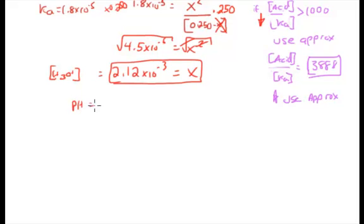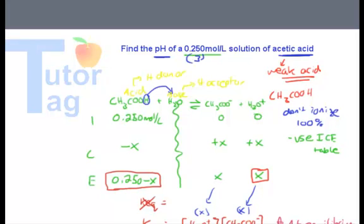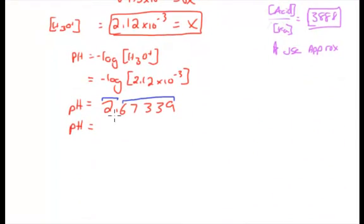Now all you need to do to find the pH is use negative log of the hydronium ion concentration, which equals negative log of 2.12 multiplied by 10 to the power of negative 3, and you get 2.67339. We need to round to the proper amount of significant digits. Significant digits are a little bit different for pH. The first number does not count as a significant digit, so the only significant digits are after the decimal place. We have three significant digits in the question, so we round to three decimal places. We do not count the first digit here as a significant digit, so you get 2.673 as your pH.